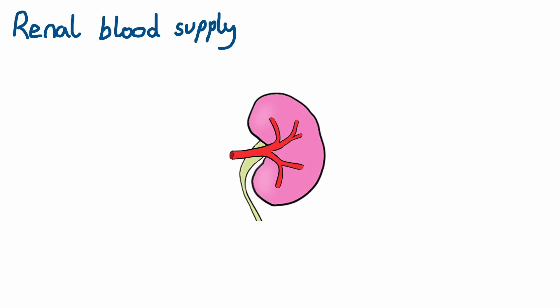Each artery divides into the anterior branch, which carries 75% of blood from the renal artery, and the posterior branch, which carries 25% of the blood.